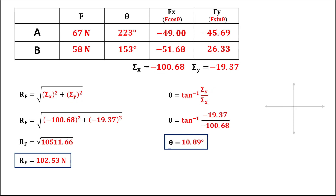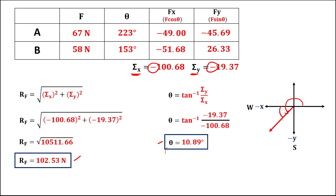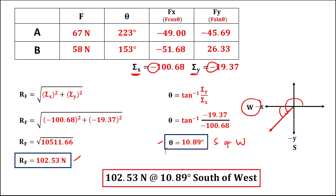To find the direction of this resultant force from the x and y components: since the x-component is negative, this is negative x, and since the y-component is also negative, this is negative y. Therefore, this resultant force lies in the west-south quadrant. Since theta is positive, that's counterclockwise, so the direction is south of west.